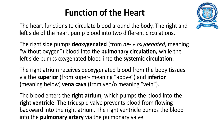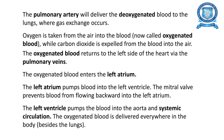The main function of the heart is to circulate blood around the body. The right side pumps deoxygenated blood into the pulmonary circulation. The right atrium receives deoxygenated blood from the body tissues and pumps it into the right ventricle. The tricuspid valve prevents blood from flowing backward into the right atrium, and the pulmonary artery delivers deoxygenated blood to the lungs.